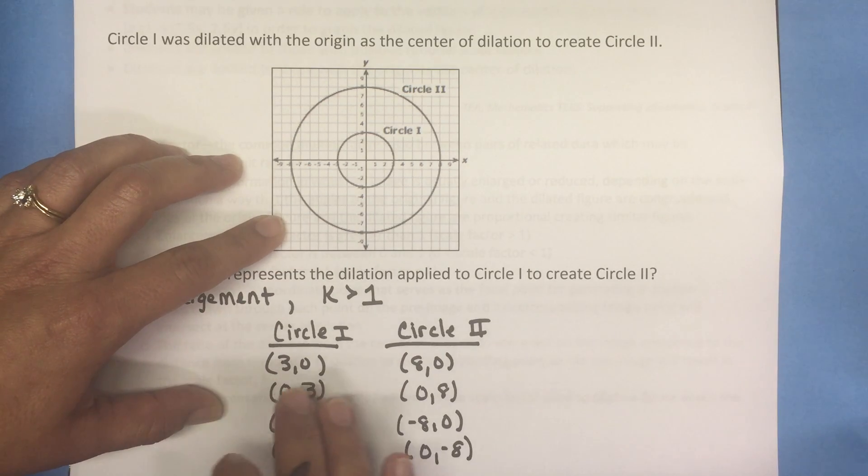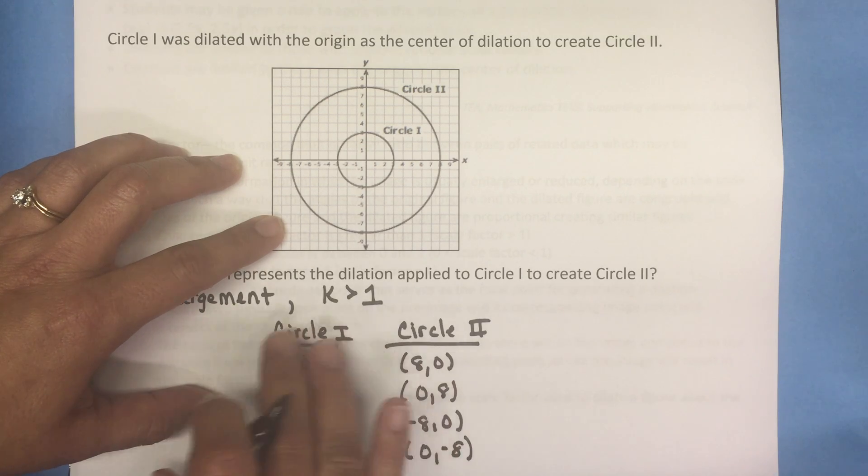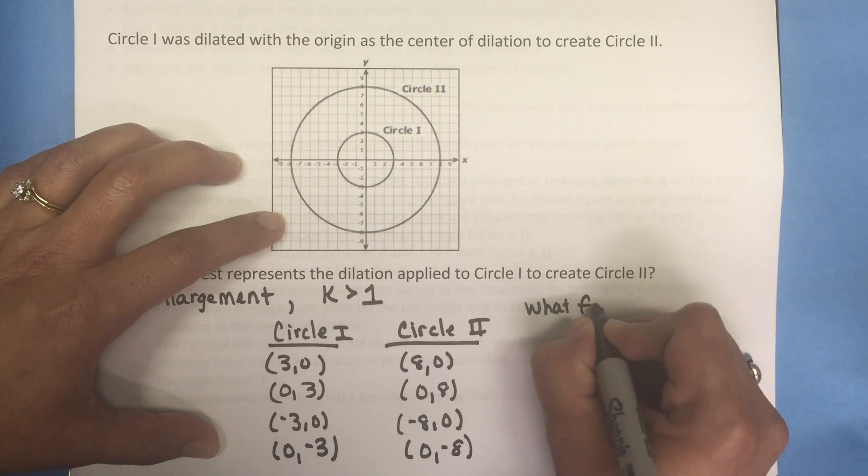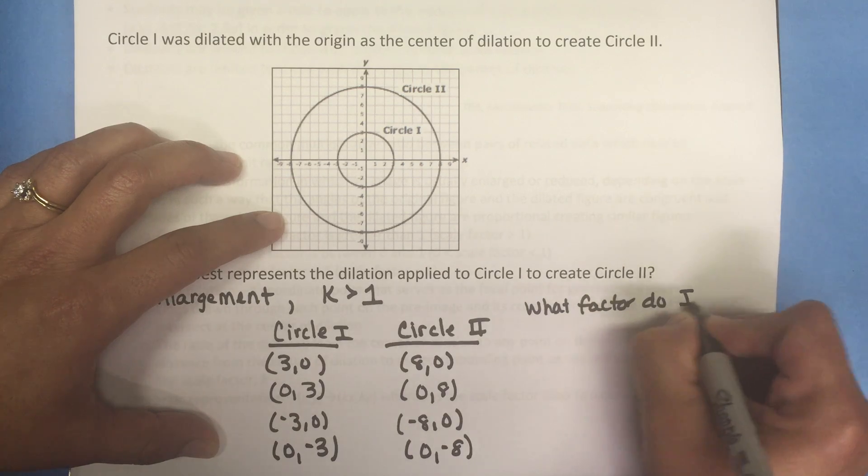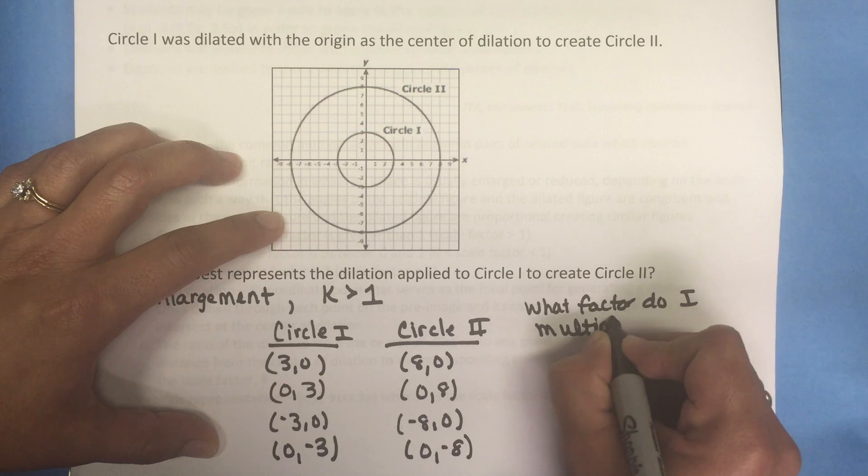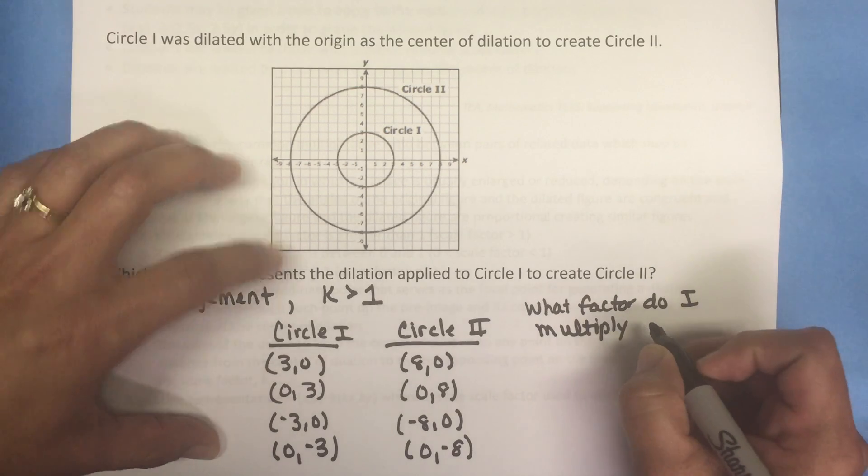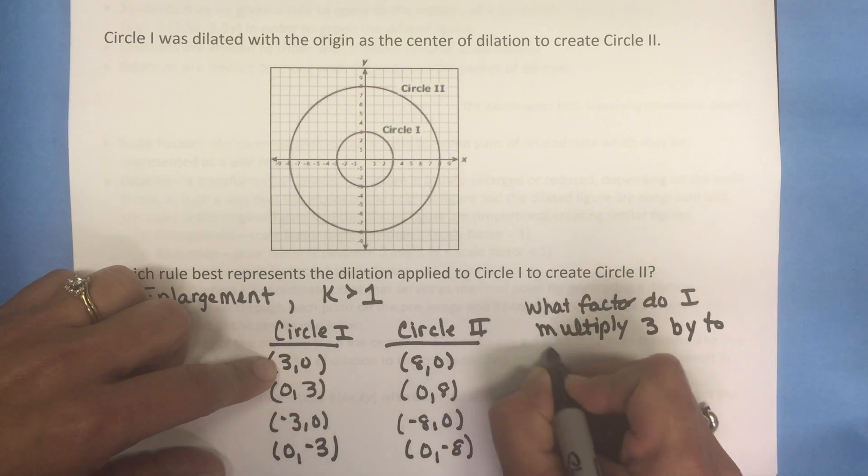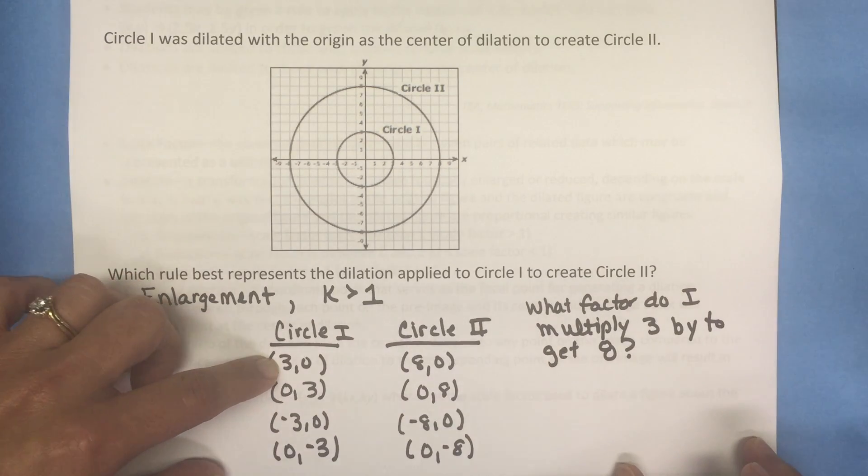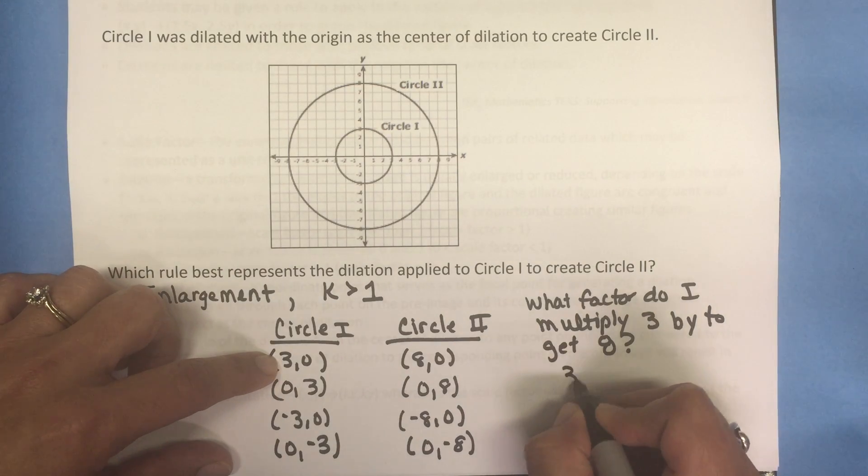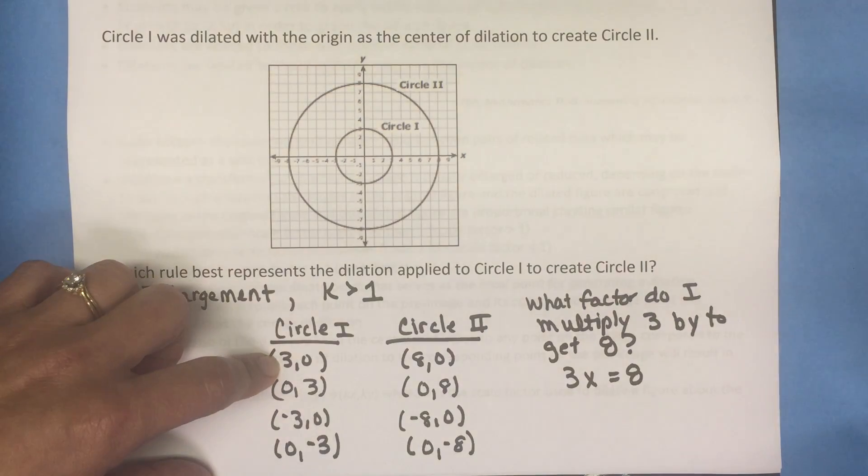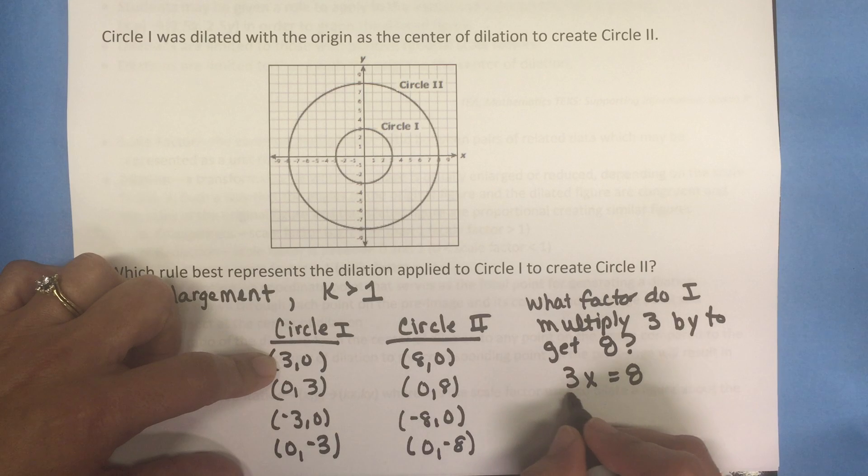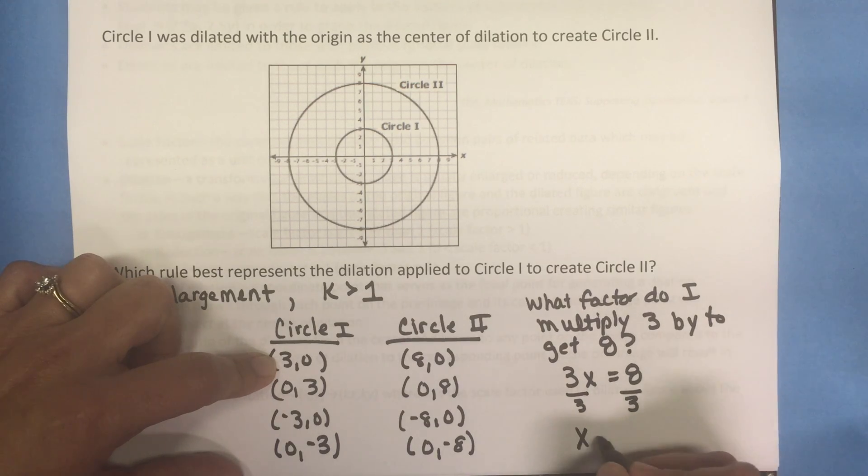We need to determine what factor is being multiplied by the coordinates in circle 1 to get the coordinates in circle 2. Let's just look at the x coordinate here. Would I multiply 3 by something to get 8? I'm going to set up a simple one-step equation. 3 times what number will give me 8? I need to isolate the variable to find the value of x. So I'm going to divide both sides by 3 and we get x equals 8 thirds.